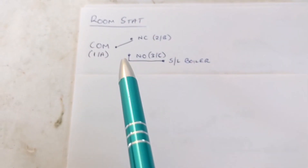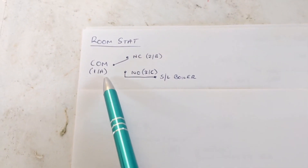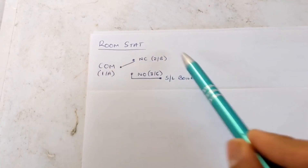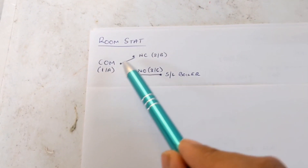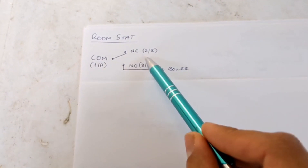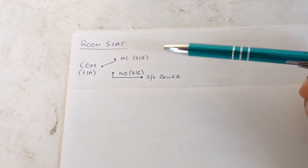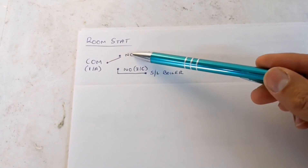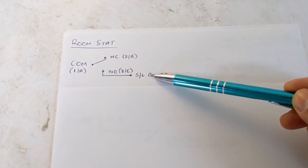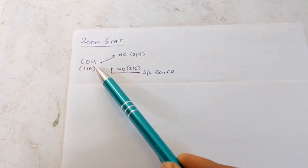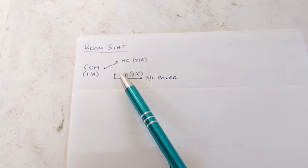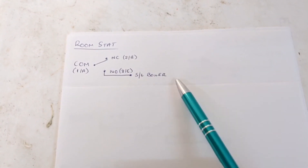Basic room stat wiring: you're going to have three terminals — this could be a mechanical room stat or a wireless receiver for a wireless room stat. You're going to have common, normally closed, and normally open. This could also be labeled as one, two, three or A, B, and C. The easiest way to remember this is NO spelt backwards is ON, so that's your switch live to the boiler. You should have 240 volts on your common, and when there's a demand for heat that will switch over to normally open and send power down to the boiler to fire it up.